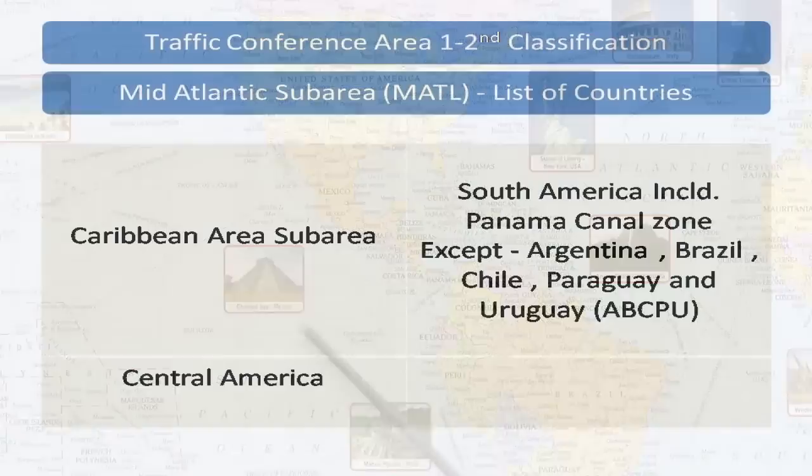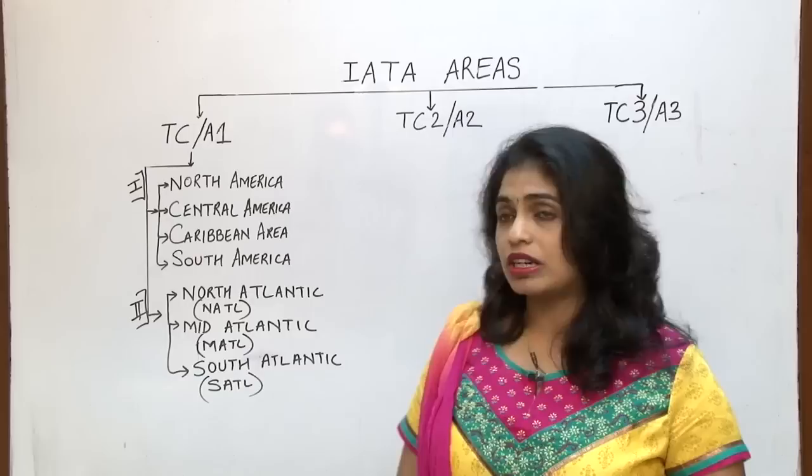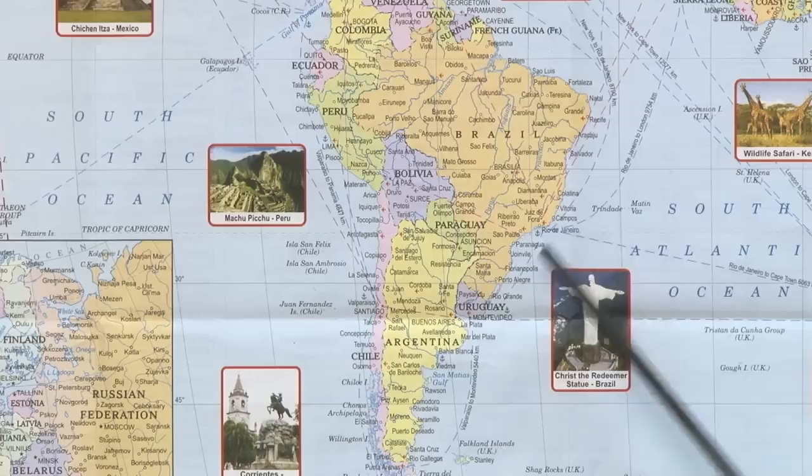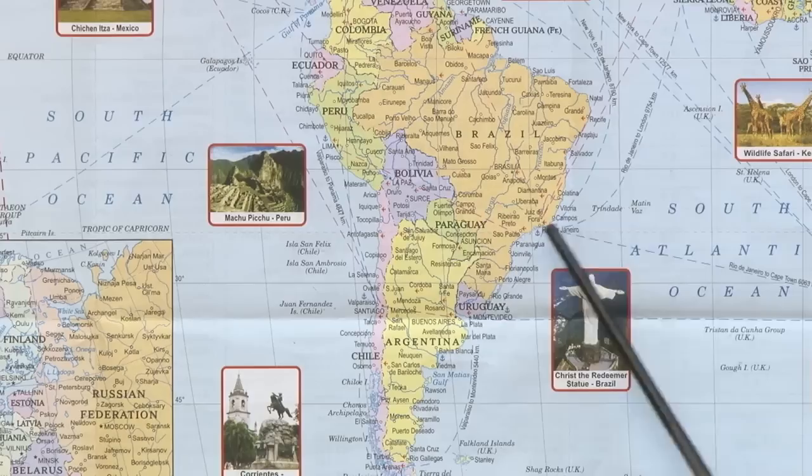Let us check the list of countries falling under the South Atlantic sub area. South Atlantic sub area will include these countries which are also known as ABCPU. These countries are slightly different from South America, which was the earlier classification.